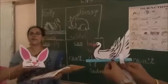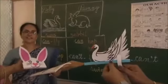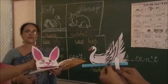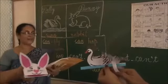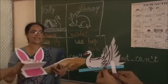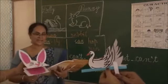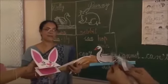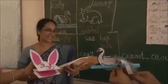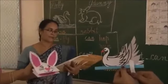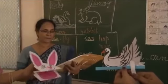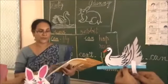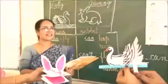Here, a swan and a rabbit came together. They are talking to each other. Let us see what they are asking. Who are you? I am a rabbit. My name is Bunny. Who are you? I am a swan. My name is Dolly. I can swim. Can you swim? I cannot swim. I can hop. Can you hop?